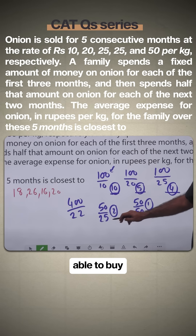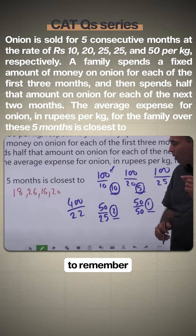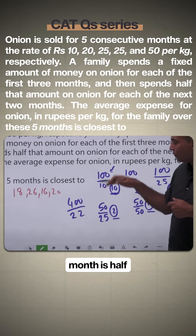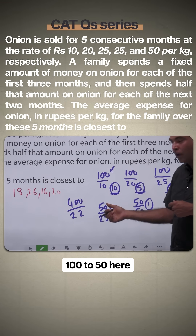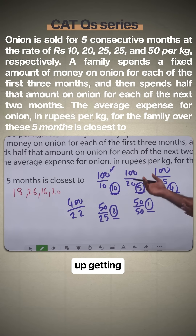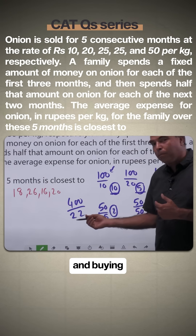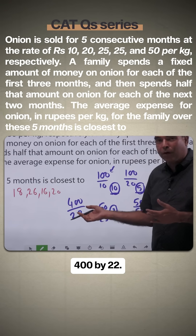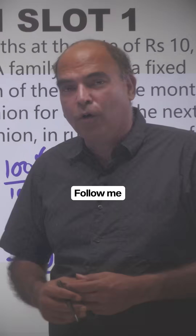In the fourth month, the expenditure drops to 50 rupees, so they buy 2 kg. In the fifth month at 50 rupees, they buy 1 kg. The total spending is 400 rupees and the total onions bought are 22 kg. The average price is 400 divided by 22, which is closest to 18 — and that's the correct answer.